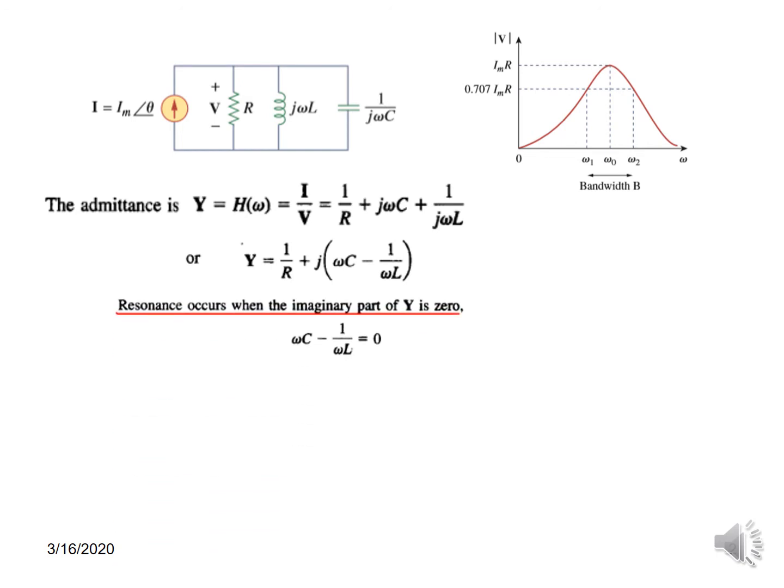And as we saw in case of a series, same here: the resonance will occur when the imaginary part of Y becomes zero. So this is the imaginary part of Y, so when this becomes zero, that means this becomes zero at resonance. And so we can say that the resonance frequency ω₀, if you move it on the other side and then take ω on one side and LC on the other side, then ω₀ will be 1/√(LC).